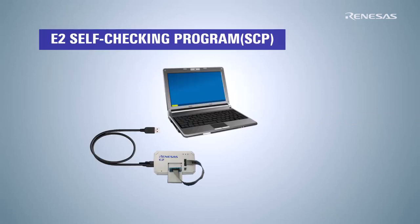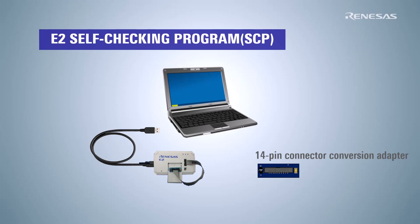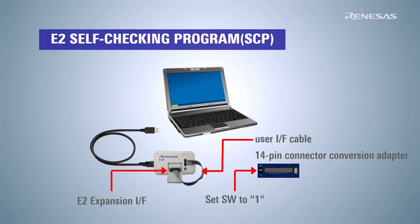Set the switch of the 14-pin connector to the one side and connect the user interface cable to the E2 expansion interface. Then connect the host PC to the E2 emulator via a USB cable.